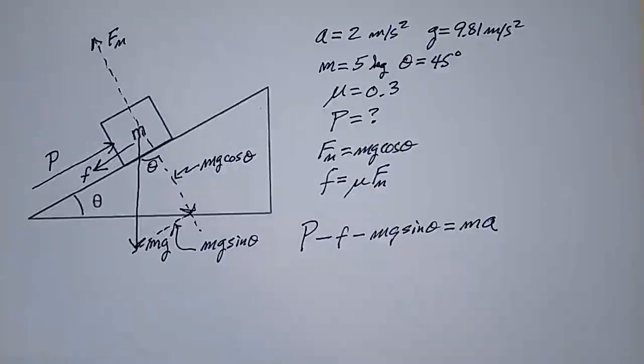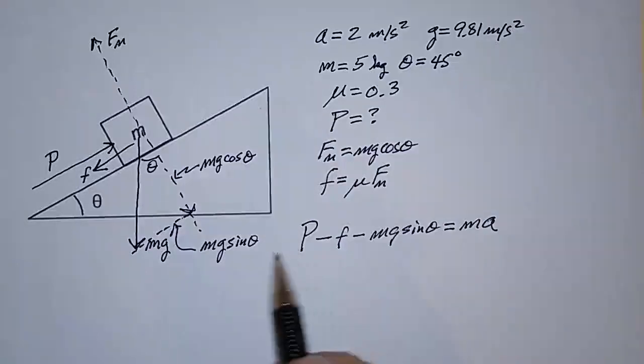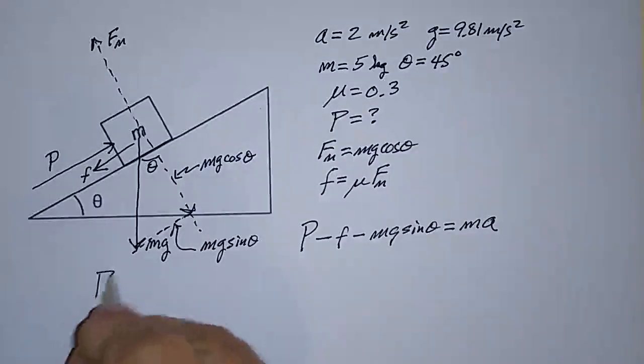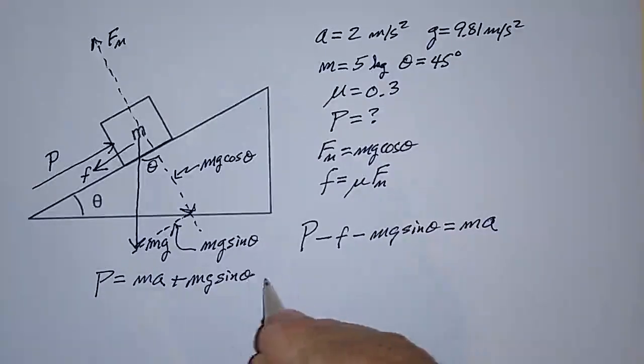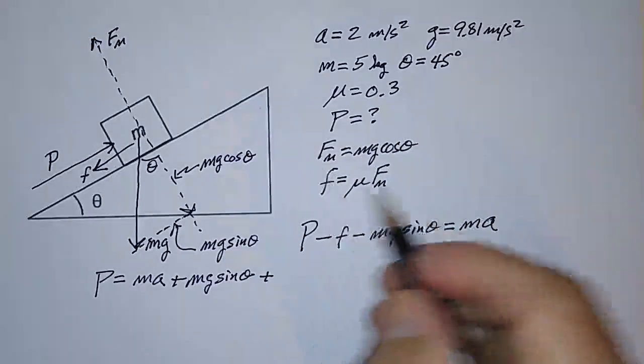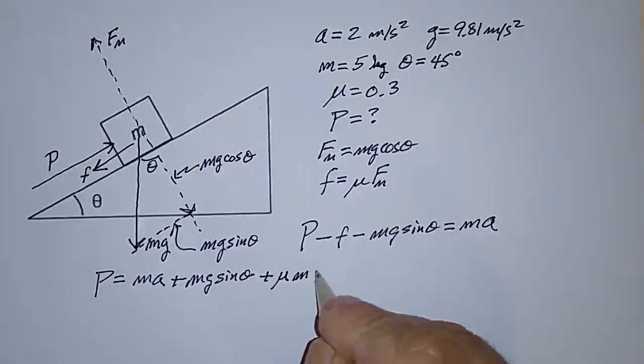That's Newton's second law, F net equals MA. And remember, what we want here is P. So I'm just going to rewrite this equation as P is equal to MA plus MG sine theta plus the frictional force. But I'm going to use this for the frictional force, and write the frictional force as mu times the normal force, which is MG cosine theta.